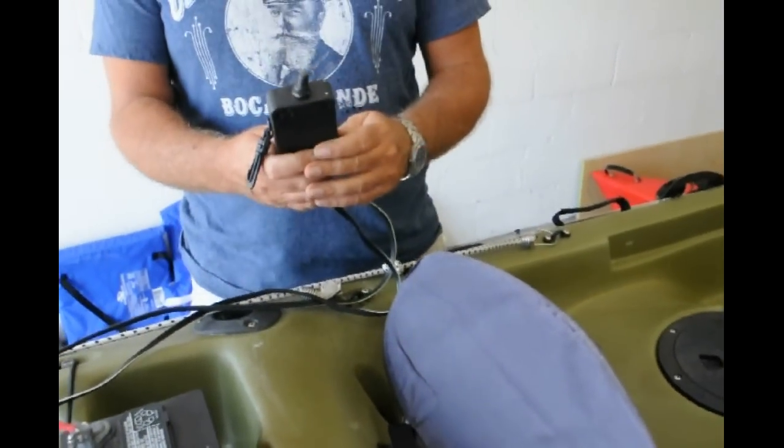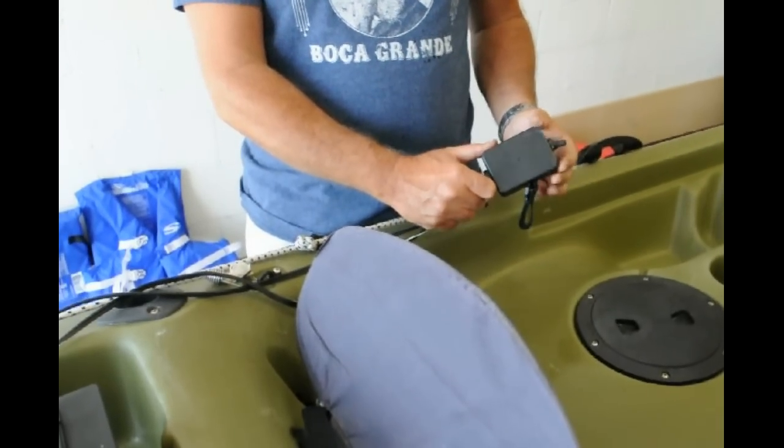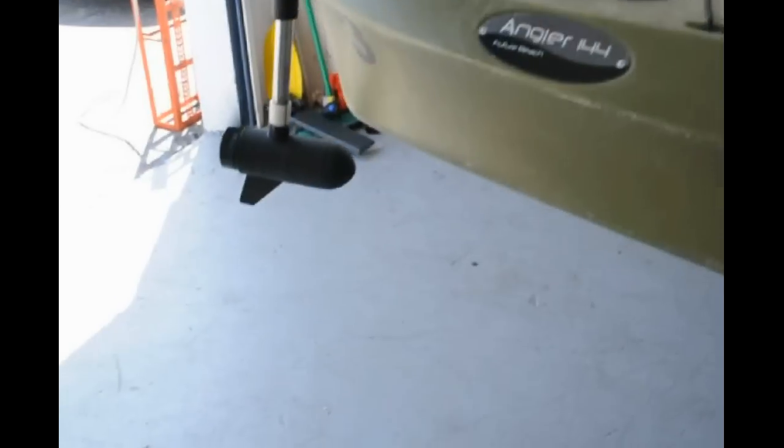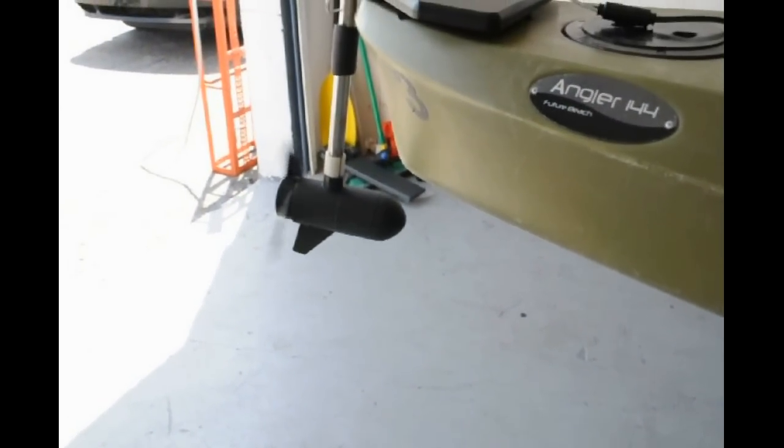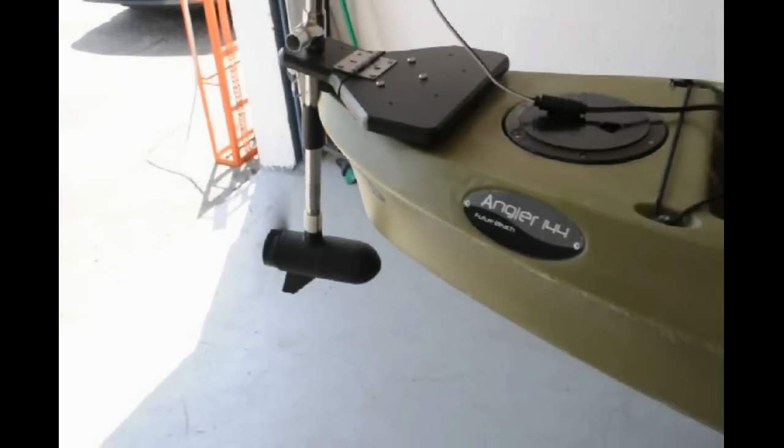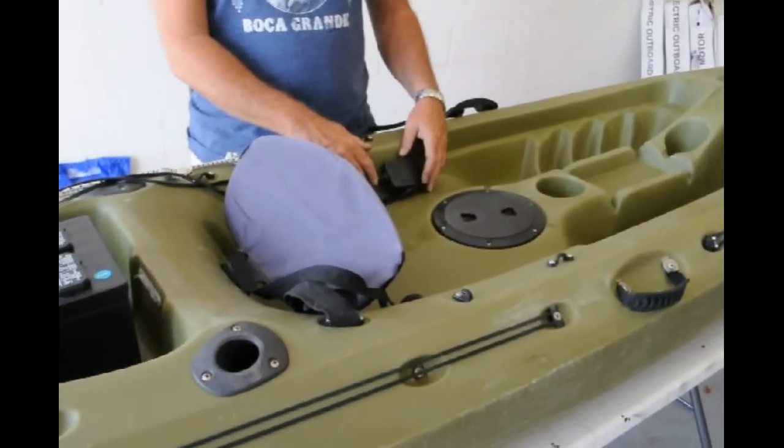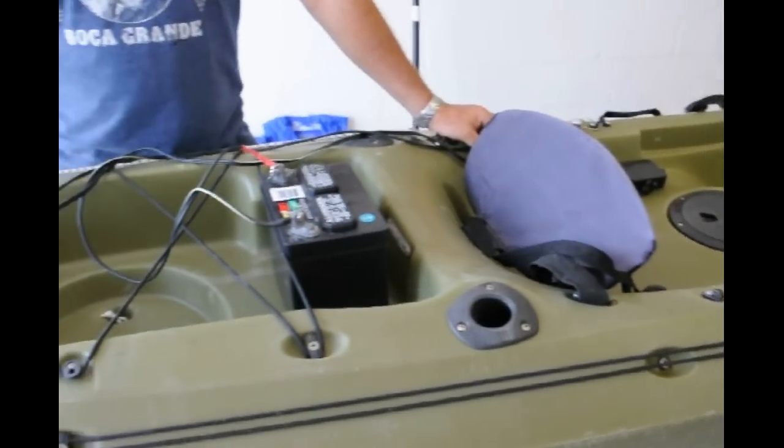And you can see that now we have our control panel is up. It turns on and it turns off. It turns on and it turns off. So it goes forward and that's it. And that's how you mount the skimmer on your kayak using the whale's tail plate.